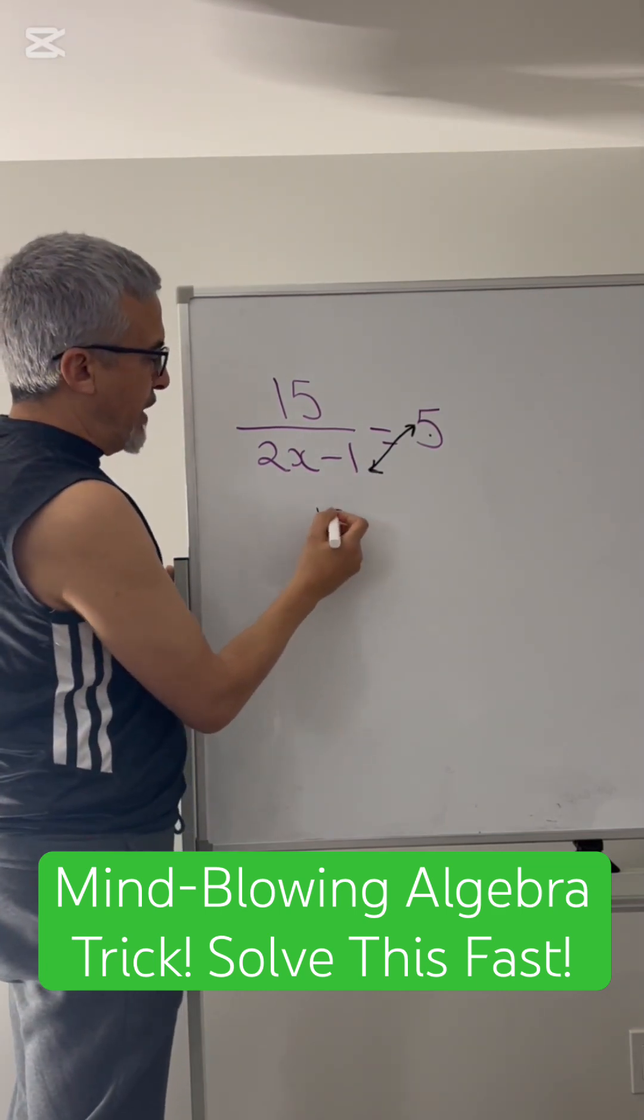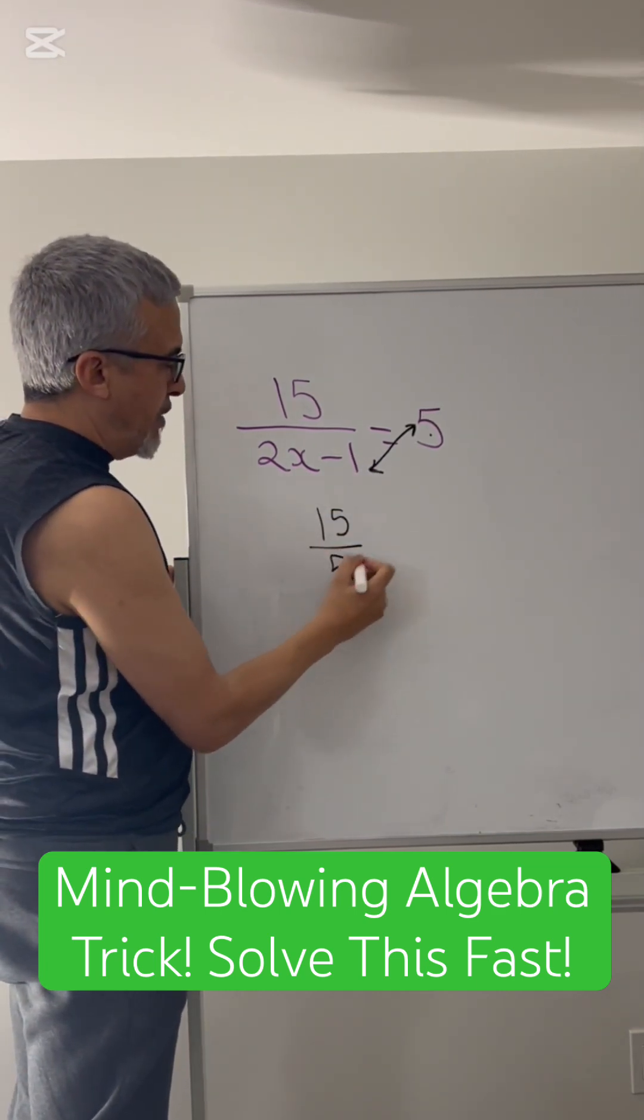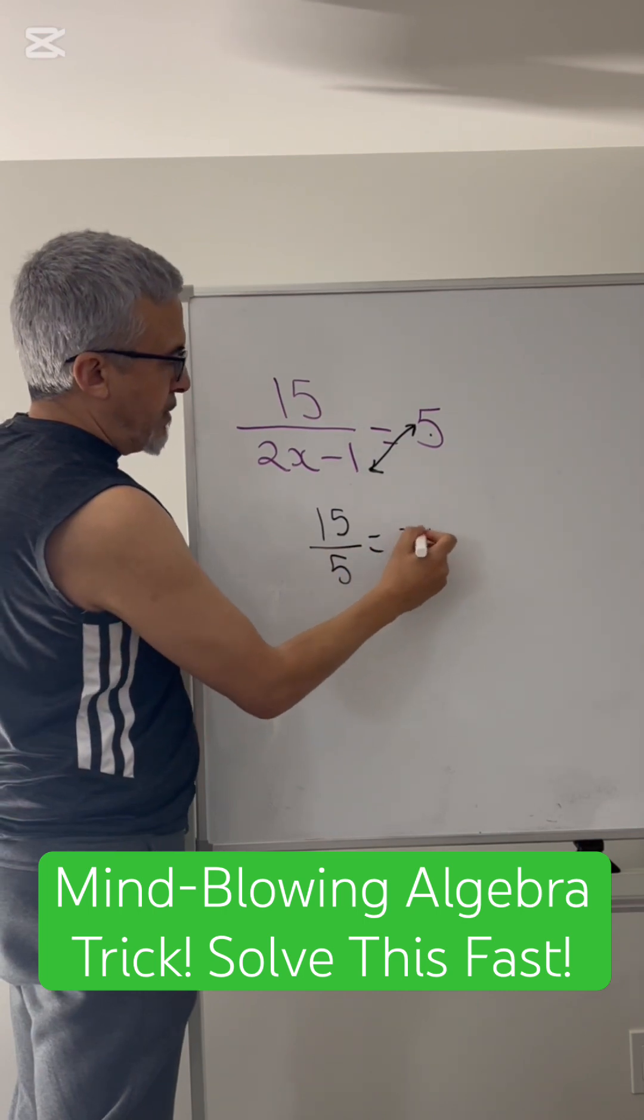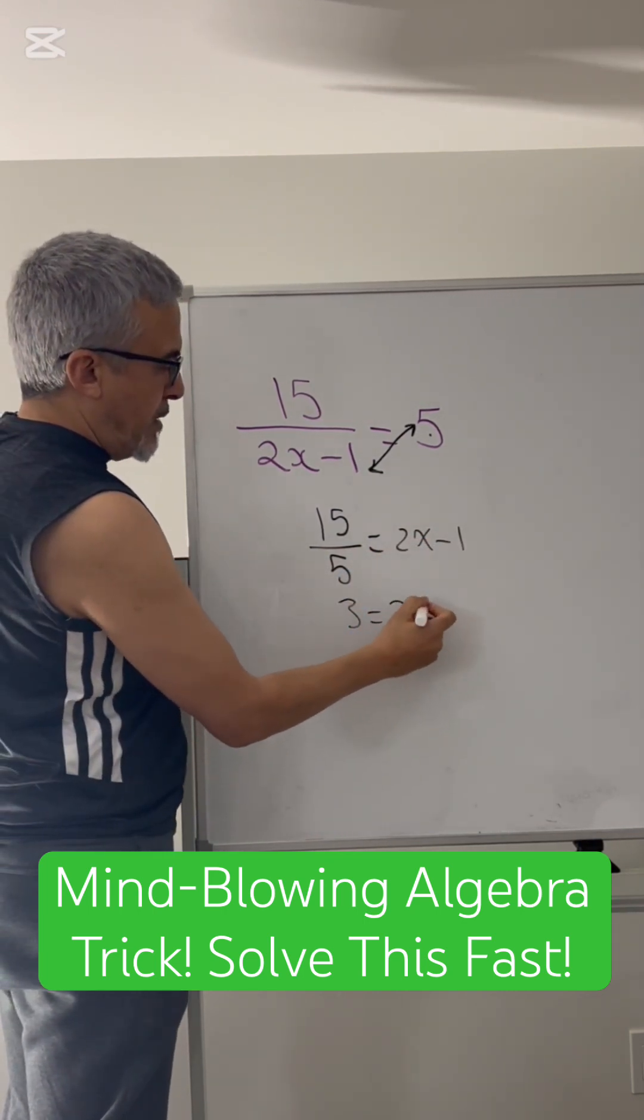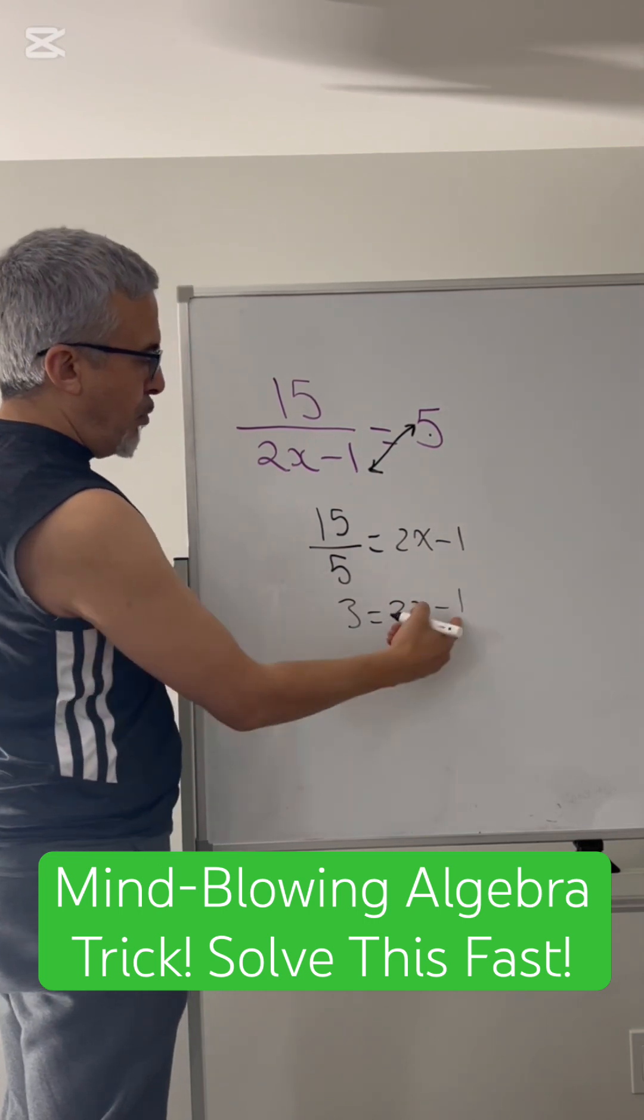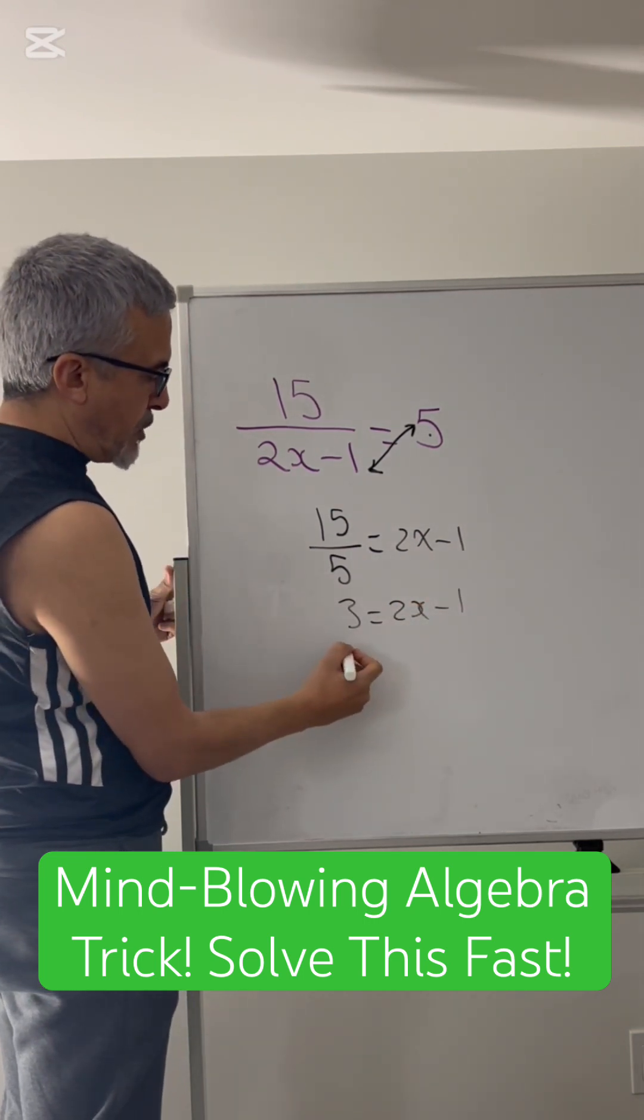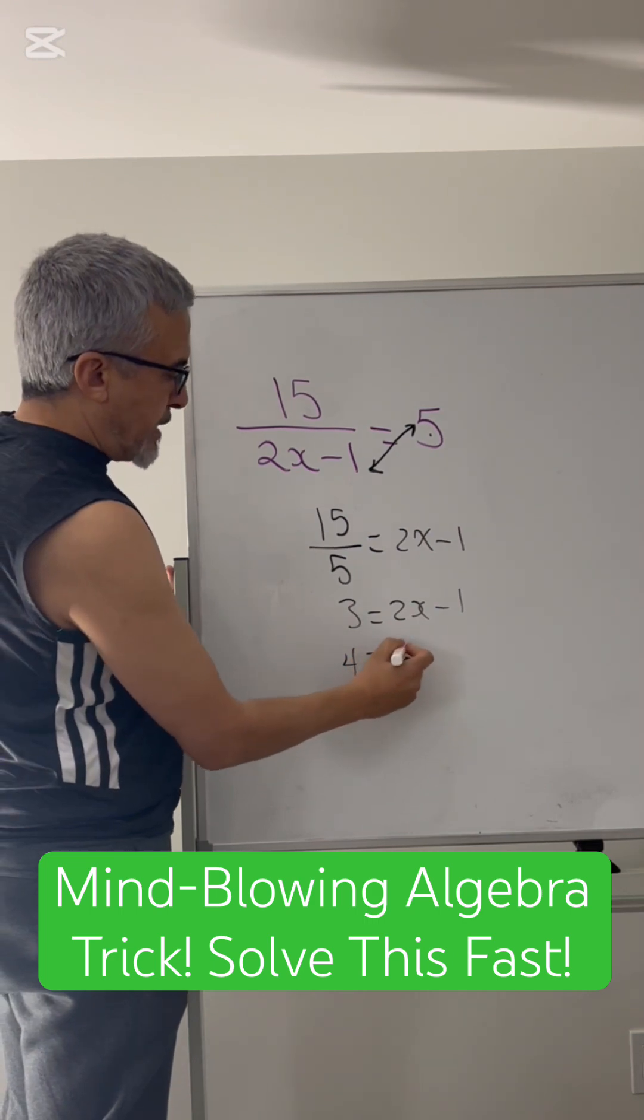So we have 15 over 5 equals 2x minus 1. That's 3 equals 2x minus 1. Move the negative 1 to this side, becomes plus 1. So 3 plus 1 is 4 equals 2x.